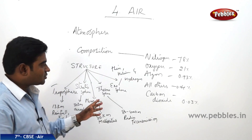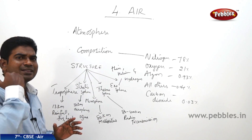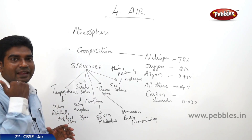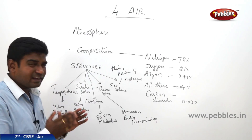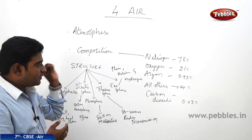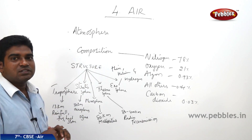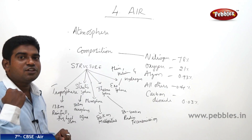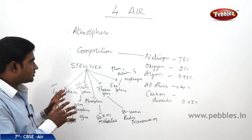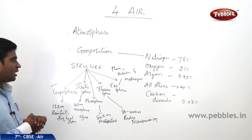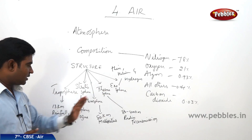Coming to the last layer, the exosphere — the very light and very thin final layer. From here, helium and hydrogen start to get released into outer space. So the structure of the atmosphere consists of five important layers.